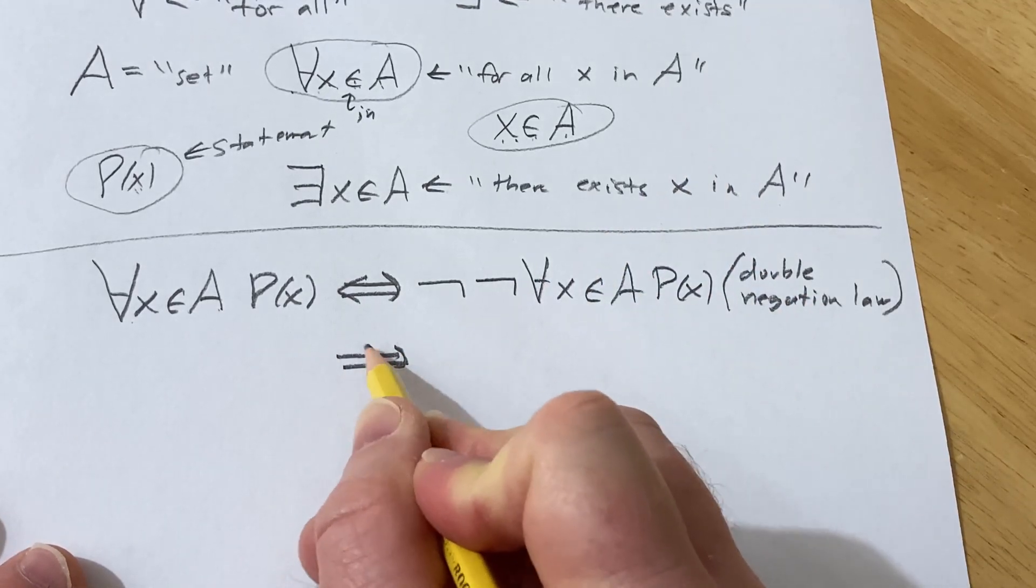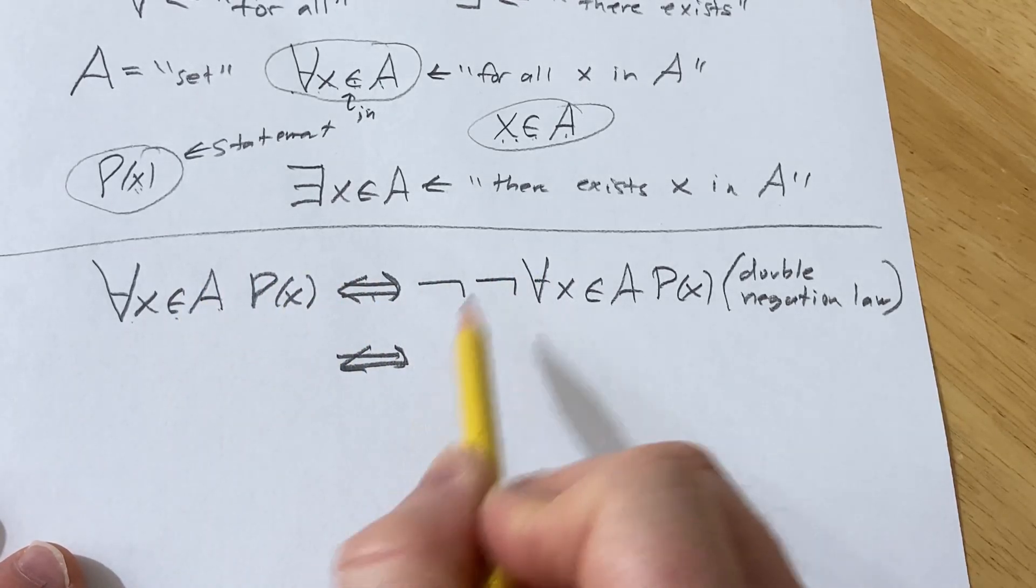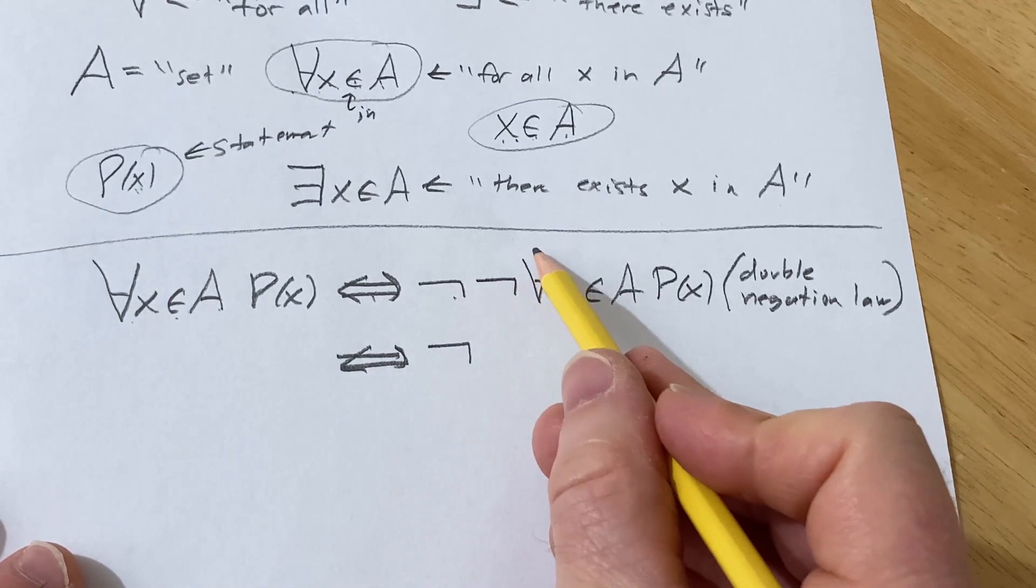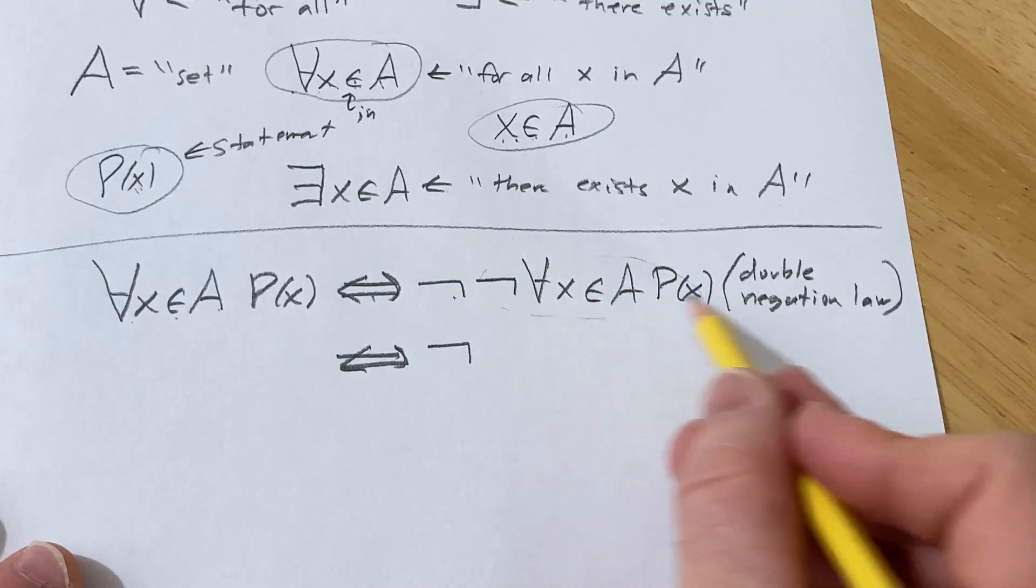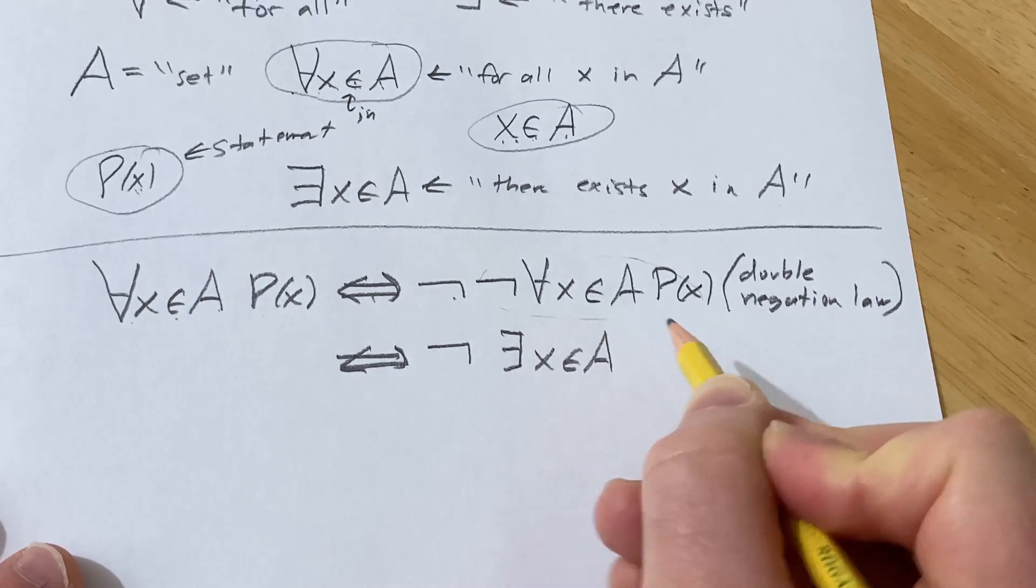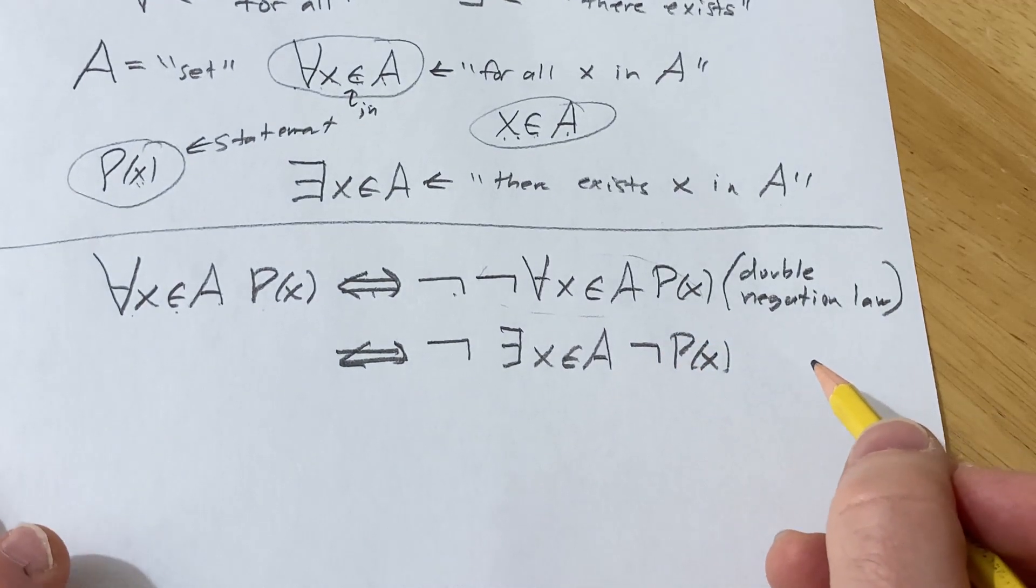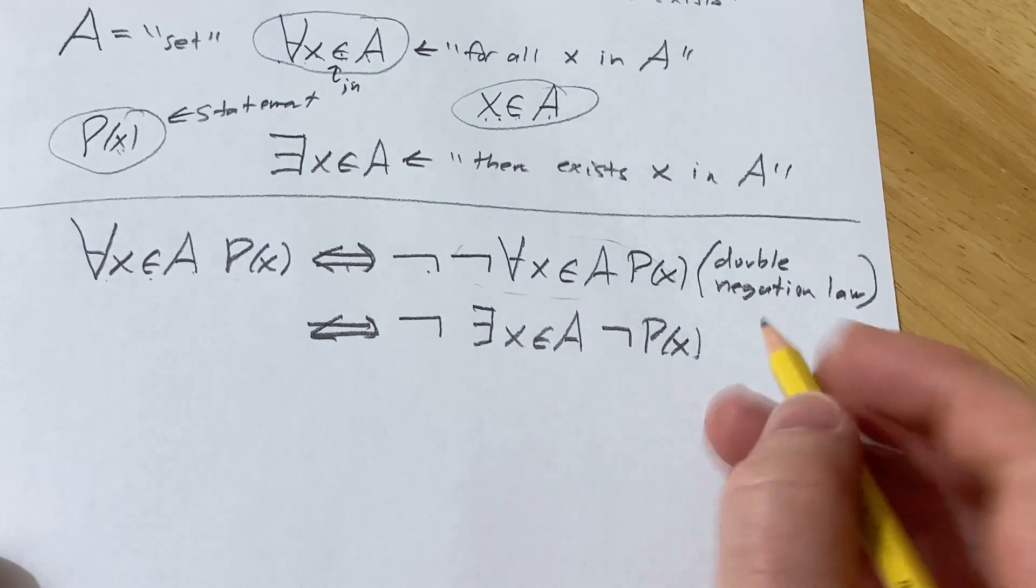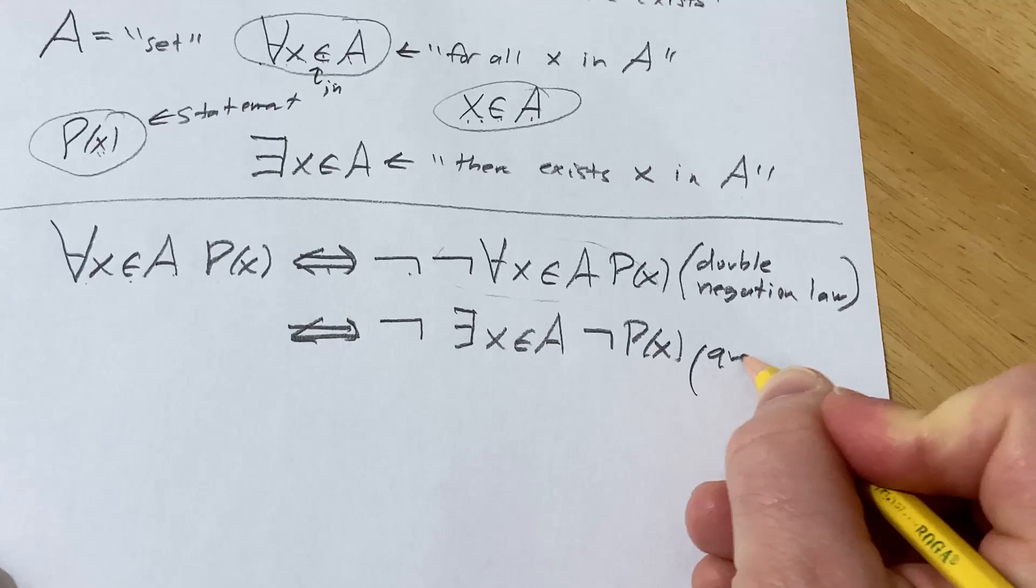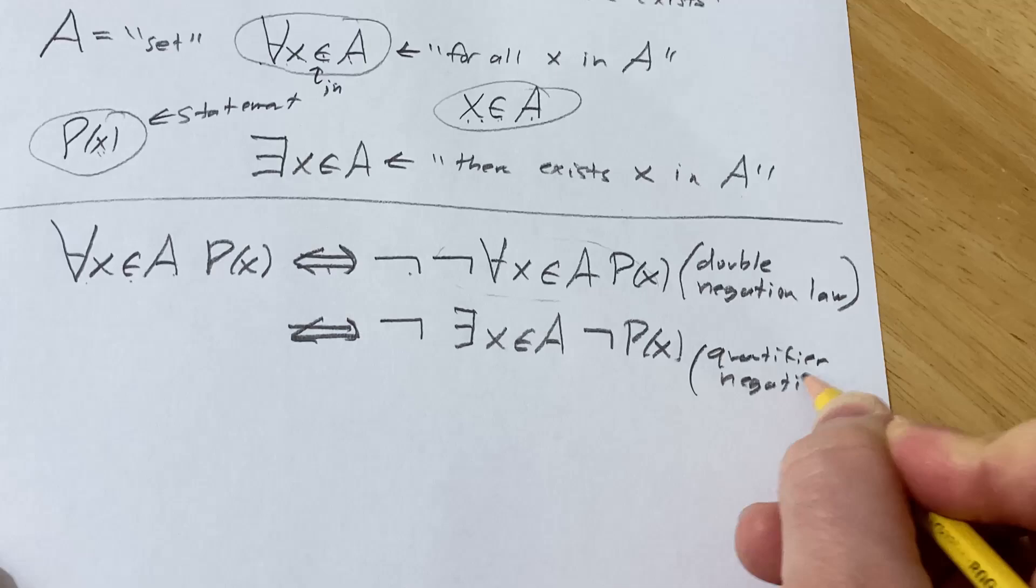All right. So now we're going to do, by the way, this double arrow is an equivalence arrow. It means that whatever I write here is the same as what I write here. So this is the same as, so I'm going to keep this one and I'm going to distribute this one through. Okay. So the opposite of this statement is there exists an X in A such that P(X) is not true. So this is something that you would need to learn in a mathematical logic class to fully understand this. So if you just believe me that it's true, everything is good. So quantifier negation law.